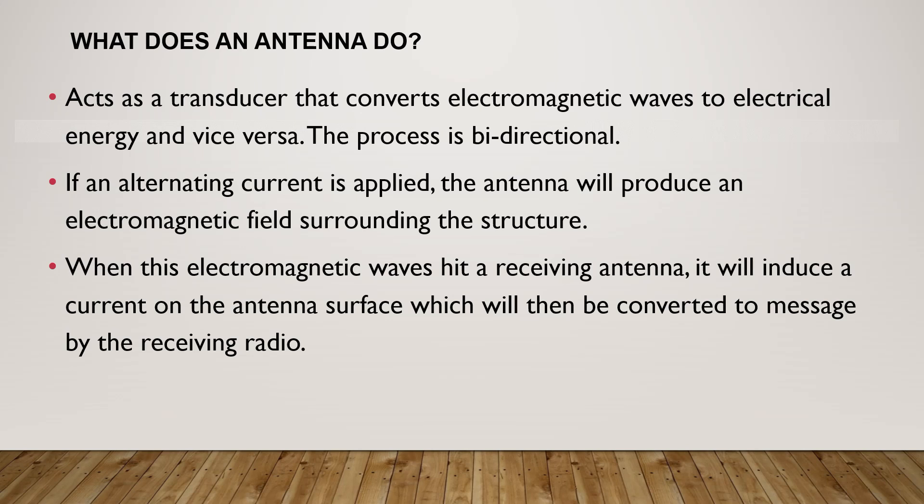If an alternating current is applied, the antenna will produce an electromagnetic field surrounding the structure. When these electromagnetic waves hit the receiving antenna, the antenna will induce current on the antenna surface, which will then be converted to the message by the receiving radio.